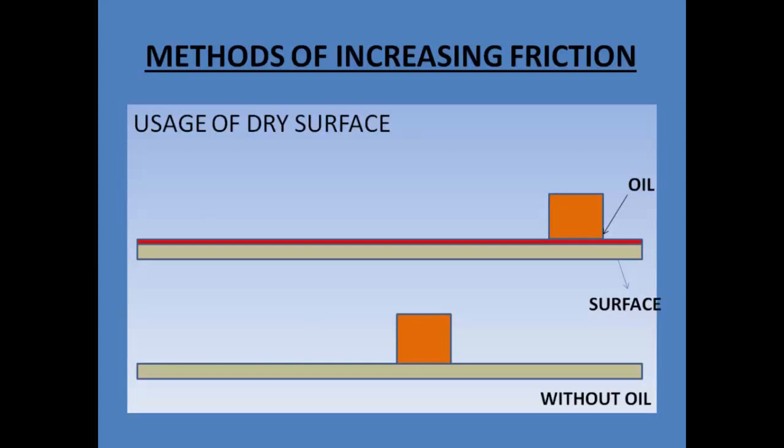This is because over a smooth surface, the force of friction is very less and so the object moves very fast. Whereas, in the second case, the force of friction is very large and hence the object doesn't move so freely. It just goes to a smaller distance and stops. So, by making use of the dry surface, we can increase the friction.